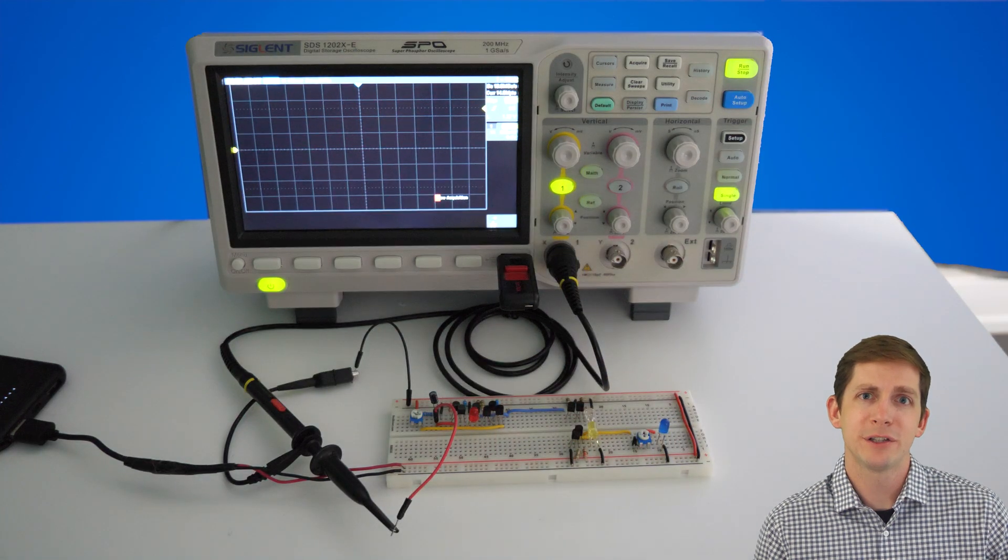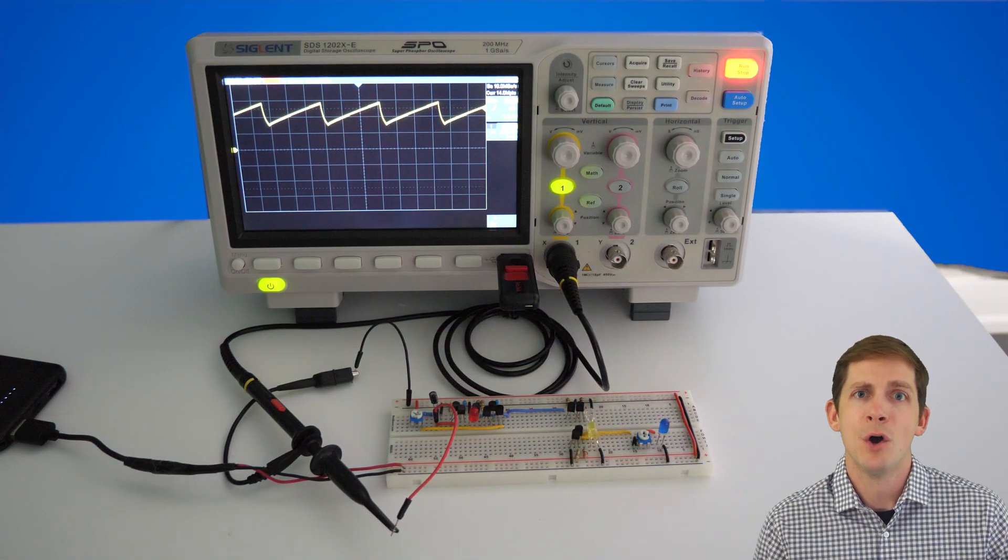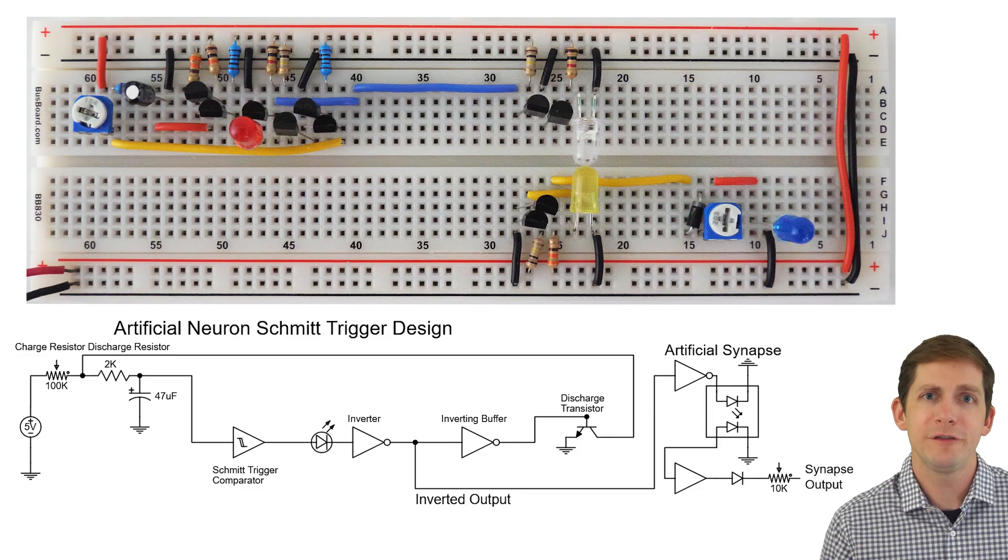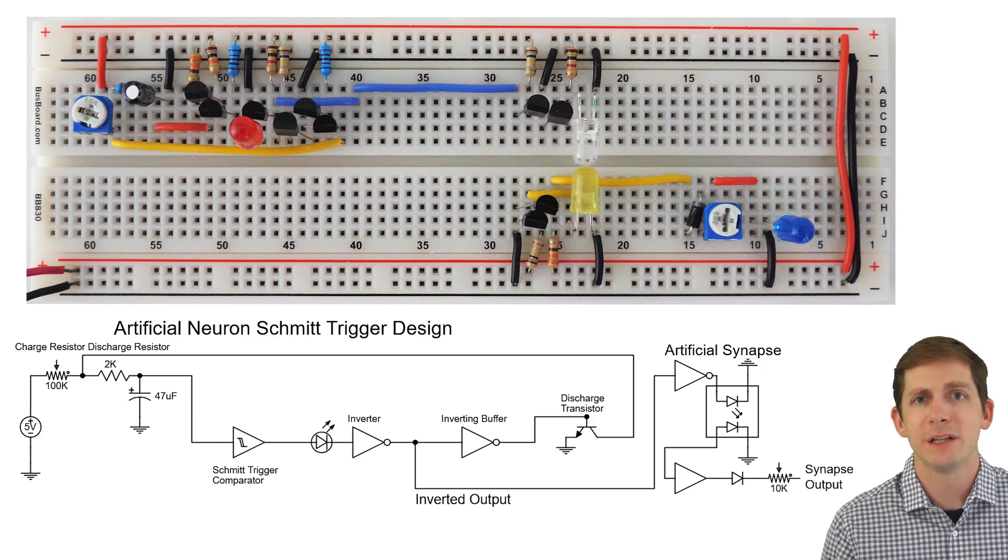Now let's hook up the circuit to the oscilloscope to see the output values. We can see that it charges and discharges to values similar to what we expected. We can adjust the firing rate of the neuron by decreasing the input resistance or by using a smaller capacitor.